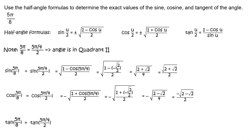To find tangent of 5π/8, write tangent of 5π/8 equals tangent of (5π/4) divided by 2. Use the half-angle formula and substitute 5π/4 for u, writing the quantity (1 minus cosine of 5π/4) divided by sine of 5π/4. Recall that cosine of 5π/4 equals negative √2/2 and sine of 5π/4 equals negative √2/2.